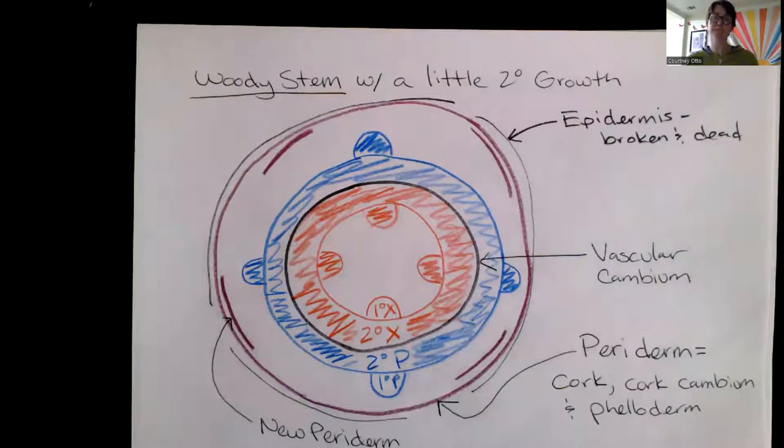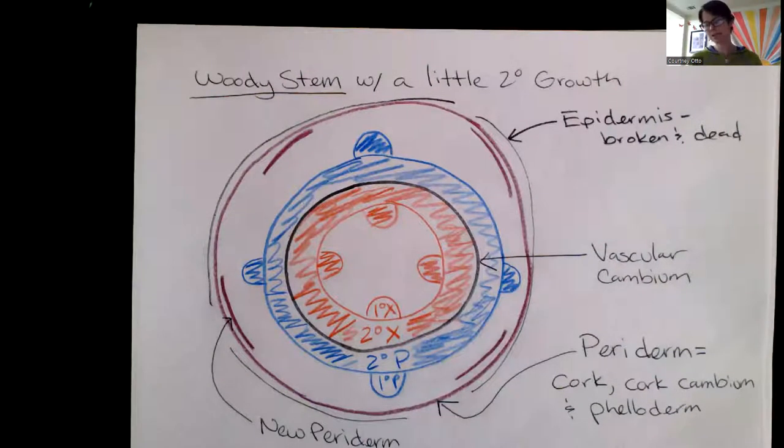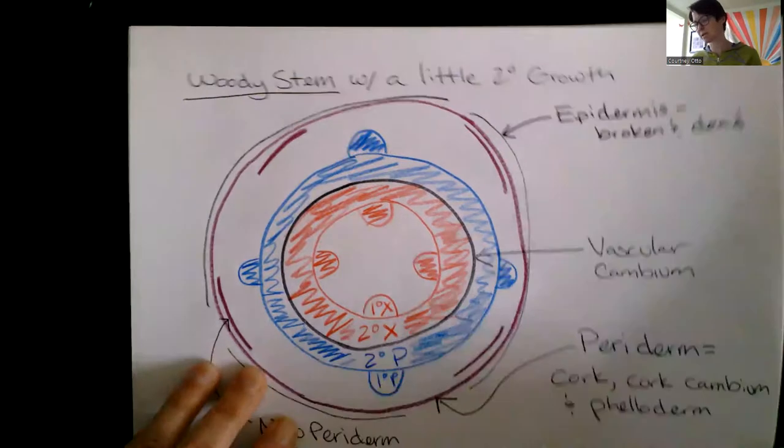We already did this right, a woody stem with a little bit of secondary growth. Instead we're going to imagine, model something that's much older, that's gone through many many years of secondary growth. And living in redwood country I know you've seen big old woody stems before. So this model is going to be of a really old woody stem.